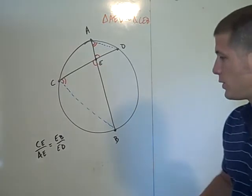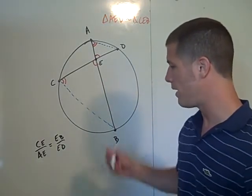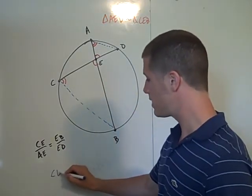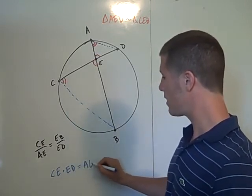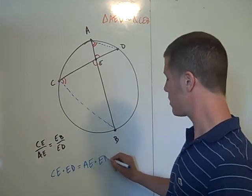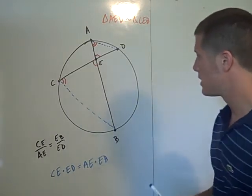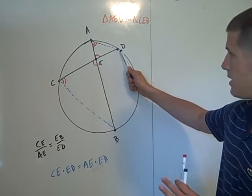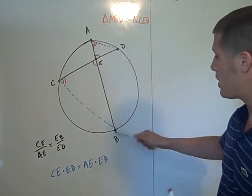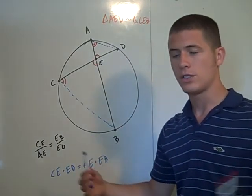And then what you can just do is you can cross-multiply. So I can say that CE times ED equals AE times EB, and that's exactly what we wanted to show, so we're done.